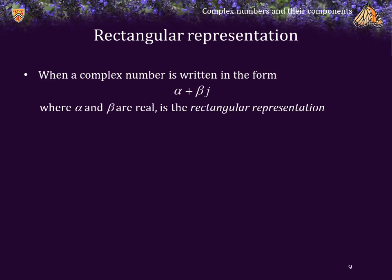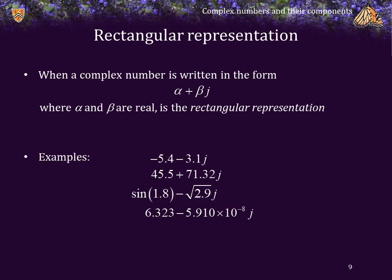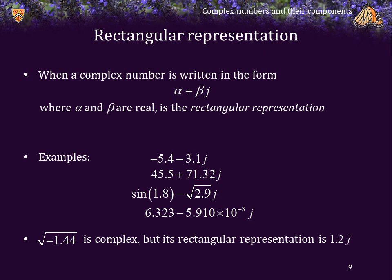When a complex number is written in the form alpha plus beta j, where alpha and beta are real, we say this is the rectangular representation of that complex number. Some examples of rectangular representations include sine of 1.8 minus the square root of 2.9j, because both the real component and the imaginary component are real numbers. Now, the square root of negative 1.44 is complex, but its rectangular representation is 1.2j.